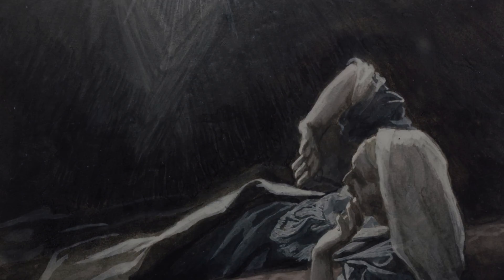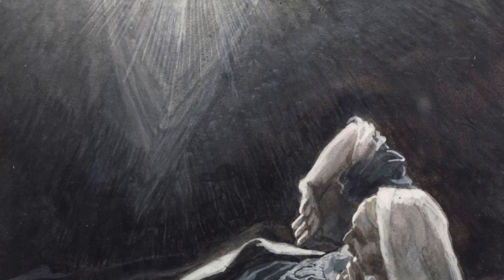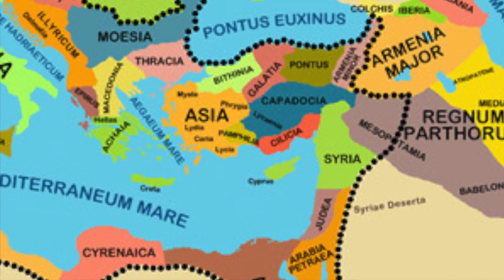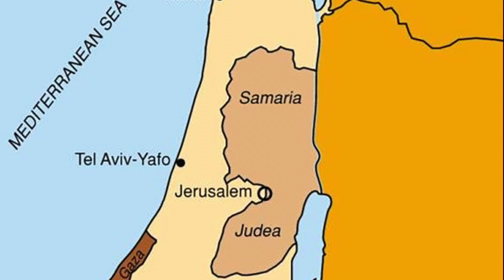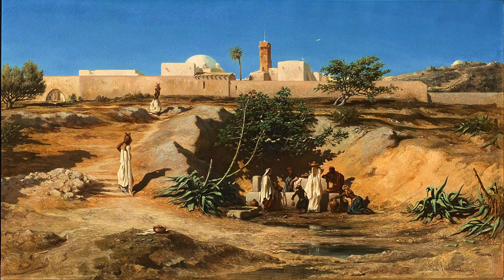In Matthew, Joseph obeys the direction of an angel to marry the Virgin Mary. Following the birth of Jesus in Bethlehem, Joseph is told by an angel in a dream to take the family to Egypt to escape the massacre of the children of Bethlehem planned by King Herod, the ruler of the Roman province of Judea. Once Herod has died, an angel tells Joseph to return, but to avoid Herod's son. He takes his wife and the child to Nazareth in Galilee and settles there.